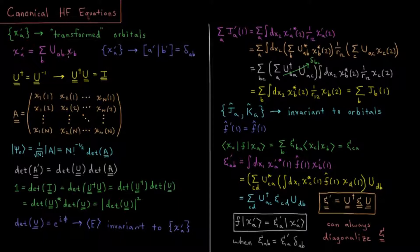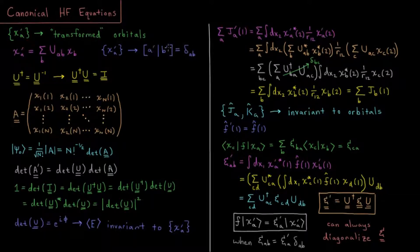If all sets of spin orbitals are equally arbitrary — equally good or equally bad — then why don't we just choose a mathematically convenient set? That would be the orthonormal set, where the overlap integral between any two spin orbitals is a Kronecker delta: one if the two are the same and zero if the two are different. Such a set would be the canonical Hartree-Fock orbitals, which we get by solving the canonical Hartree-Fock equations we're trying to arrive at in this video.